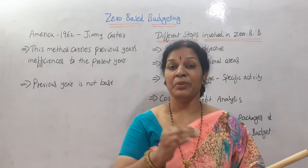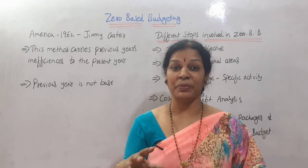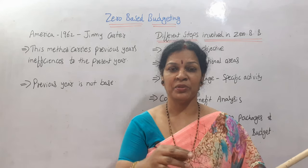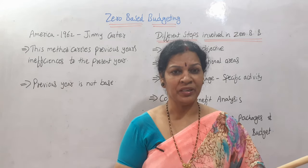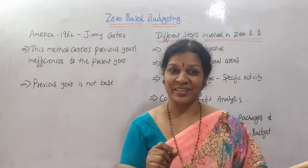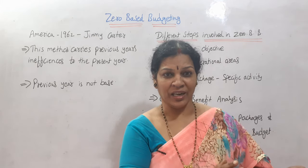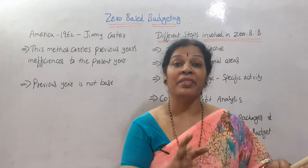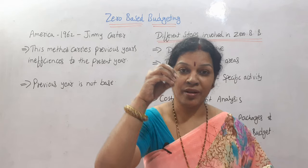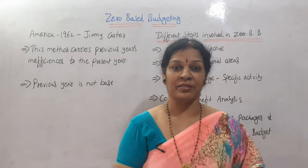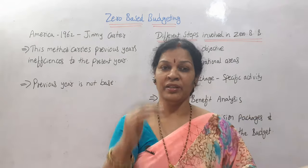In previous budgets, we took historical data and presented it properly — whether in a sales budget, cash budget, production budget, or flexible budget. But in zero-based budget, we are not going to take the previous year's data as a base. Instead, we focus on what inefficiencies and main problems were related to that budget — the drawbacks and mistakes — so that they should not repeat.